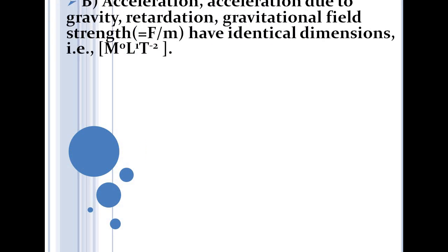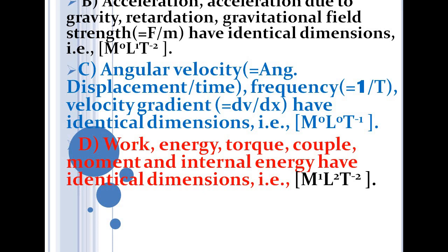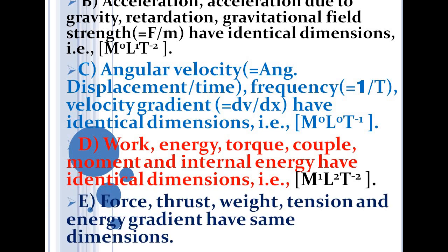Second set: acceleration due to gravity, retardation, and gravitational field strength have dimension LT⁻². Angular velocity, frequency, and velocity gradient have dimension T⁻¹. Work, energy, torque, couple, moment of momentum, and internal energy have dimension ML²T⁻². Force, thrust, weight, tension, and energy gradient also have identical dimensions: MLT⁻².